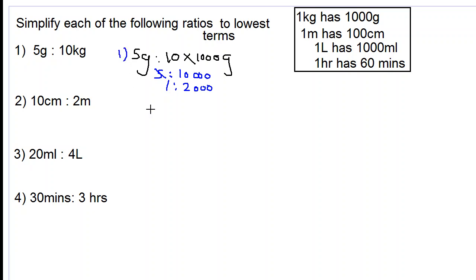Let's look at number two: 10 centimeters to 2 meters. This is the same as 10 centimeters to 2 times 100 centimeters, since one meter is 100 centimeters. This is the same as 10 to 200. We divide by 10. 10 into 10 is 1, 10 into 200 is 20. This is the answer for number two.